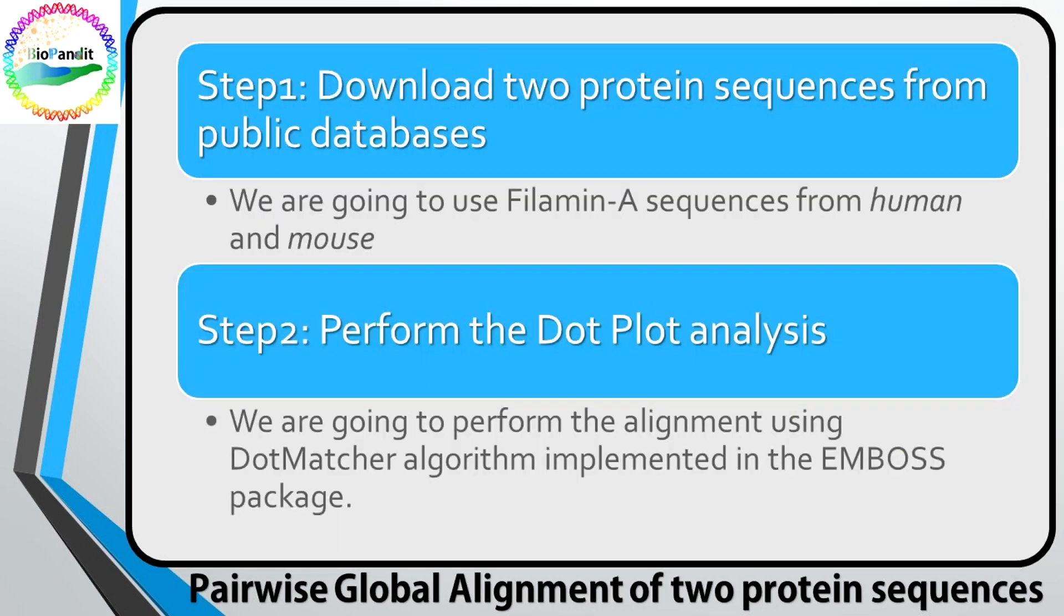This analysis has two parts. First, we must download some protein sequences from public databases. We are going to use human and mouse muscle protein philamine A sequences. The second part is to perform the dot plot. There are multiple standalone software tools and online servers for this analysis. We are going to show you the use of dot matcher algorithm implemented in the emboss package.